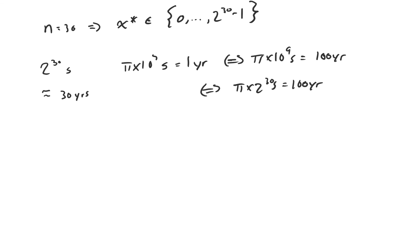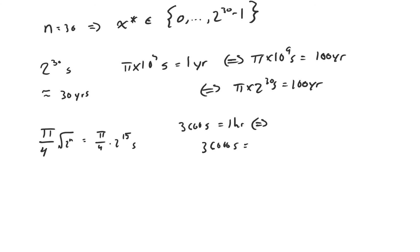In the quantum case, we only have to apply the subroutine π/4 × √(2^30) = π/4 × √(2^15) times. That's π/4 × √(2^15) queries to the oracle, or π/4 × √(2^15) seconds. There are 3,600 seconds in an hour and 36,000 seconds in 10 hours, and that's larger than 2^15. So the total time spent querying the oracle is less than 10 hours in the quantum case. The difference between the quantum and classical algorithm is the difference between working one 8-hour day versus an 8-hour day for every day of your life.